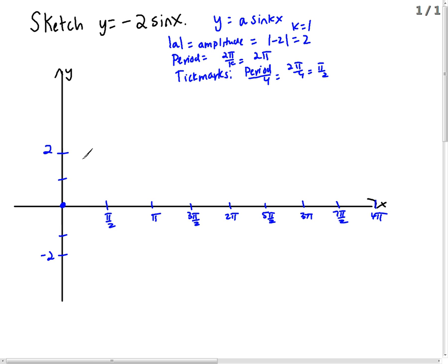Then sine normally goes high, but it's negative so we're going to flip it - it's going to go low, middle, high, middle, low, middle, high, middle. And we're going to graph it in a nice smooth curve.